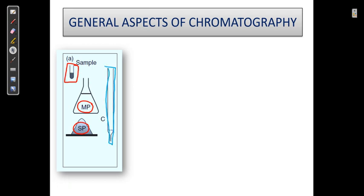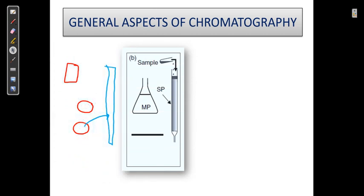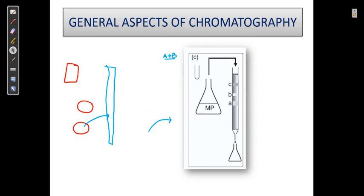The column contains the stationary phase. First, the stationary phase is filled into the column. Then we add the sample components we want to separate — containing A plus B, or A plus B plus C plus D. The next step is to add the mobile phase. When we add the mobile phase, the components begin to separate one by one.